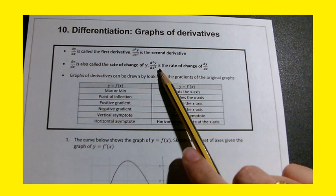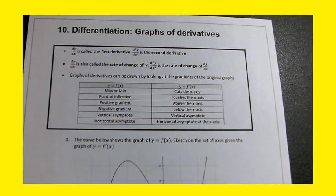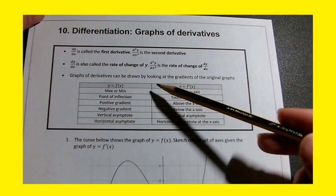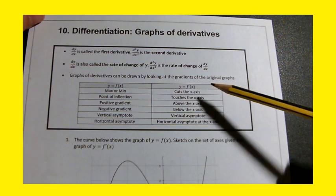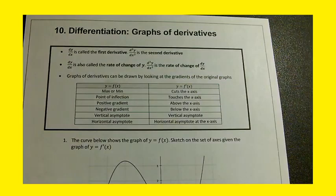d squared y dx squared is the rate of change of this gradient which we already discovered in the previous video. Graphs of dy dx or these derivatives can be drawn by looking at the gradients of the original graphs. We have to look at the gradients and understand how we can draw a graph of a derivative.